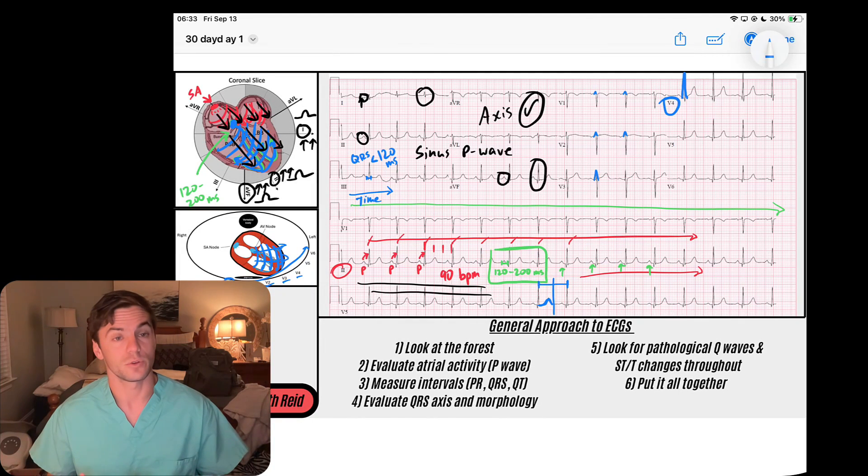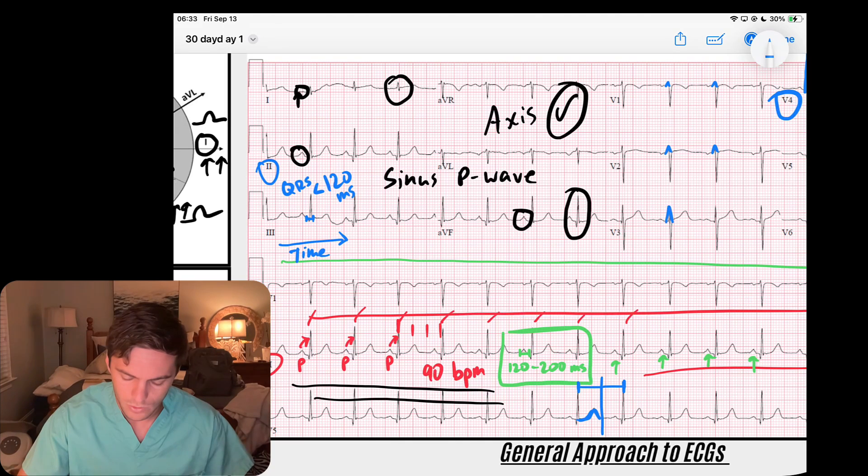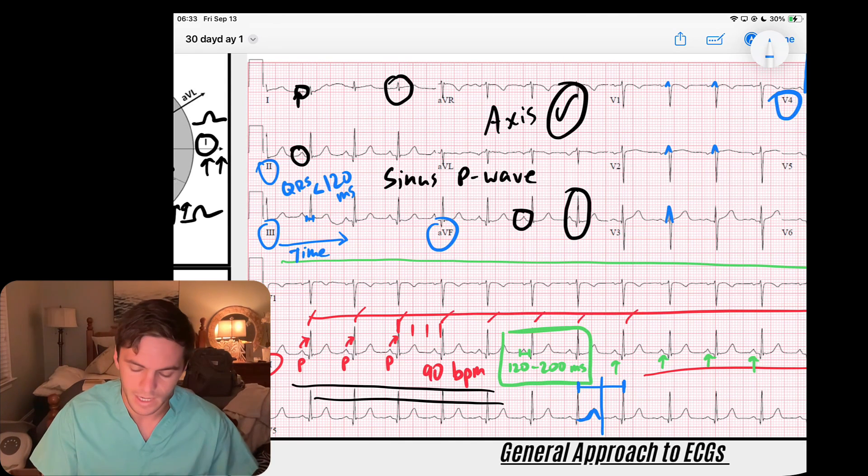Then I'll look for pathological Q waves, which tell me if there are any prior myocardial infarctions—those are deep Q waves that tell me that region of the heart might be scarred. I don't see that here. Then I also look for ST and T wave changes throughout the rhythm. We'll look in the inferior leads—leads two, three, and AVF.